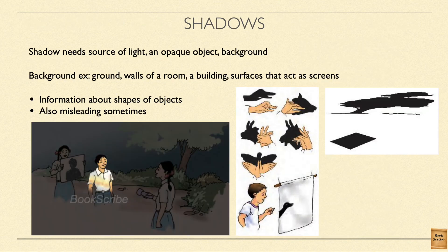So what is a shadow? When we go and stand out in the sun, or if we keep an opaque object in sunlight, we can see a shadow on the ground. The shadow shows the shape of whatever opaque object we place, including ourselves. If you go inside a dark room, you can't see anything.